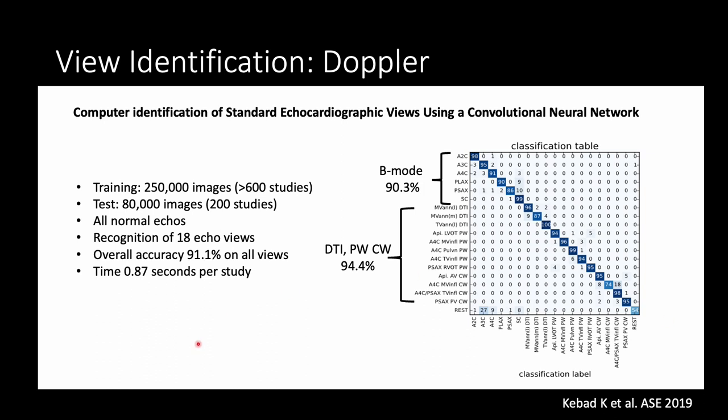Convolutional neural networks have also been used to analyze Doppler images — PW and CW images — in addition to B-mode images. The accuracy of doing this has been high at 94.4%, and the processing time is very short: only 0.87 seconds per study for the algorithm to identify all the images.